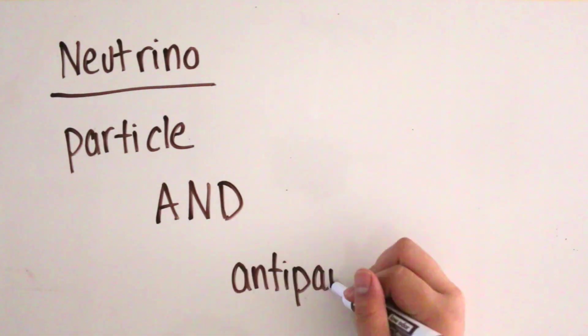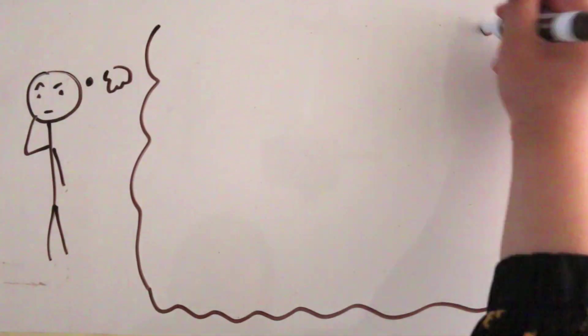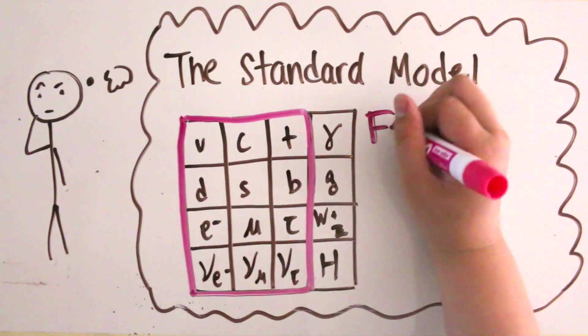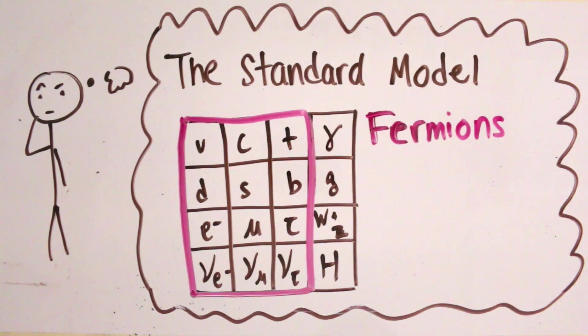Is the neutrino its own antiparticle? This question stands on the forefront of physics and the standard model. All fermions, a type of particle, have their own antiparticle.